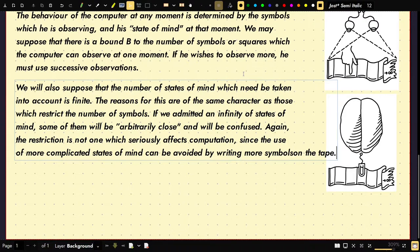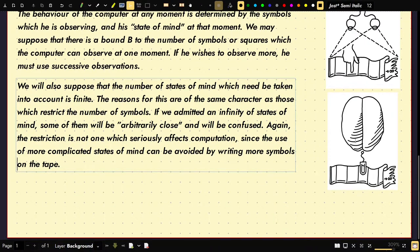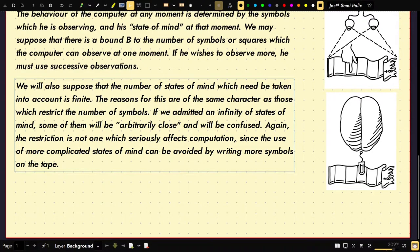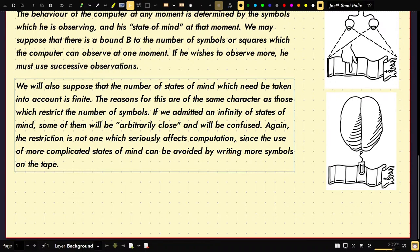We also suppose that the number of states of mind which need to be taken into account is finite, for the same reasons as with the symbols. If we admitted an infinity of states of mind, some would be arbitrarily close and confused. The restriction is not serious since more complicated states of mind can be avoided by writing more symbols on the tape. The justification lies in the fact that human memory is necessarily limited — our brain is made of finite matter. Also, if a Turing machine had infinitely many states, everything would be computable and the study would be meaningless.